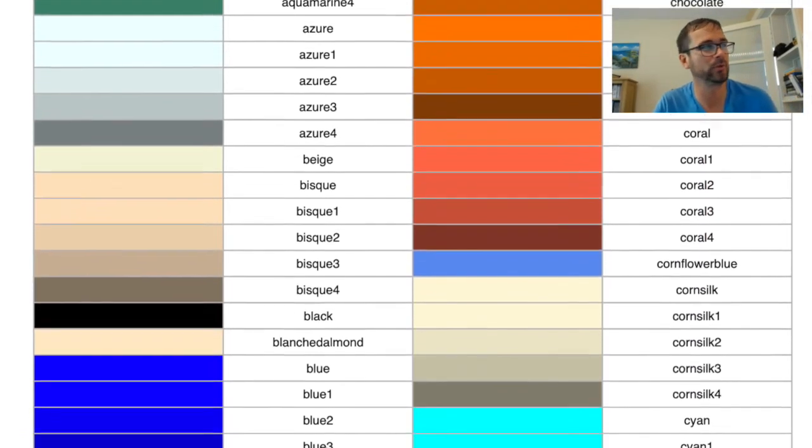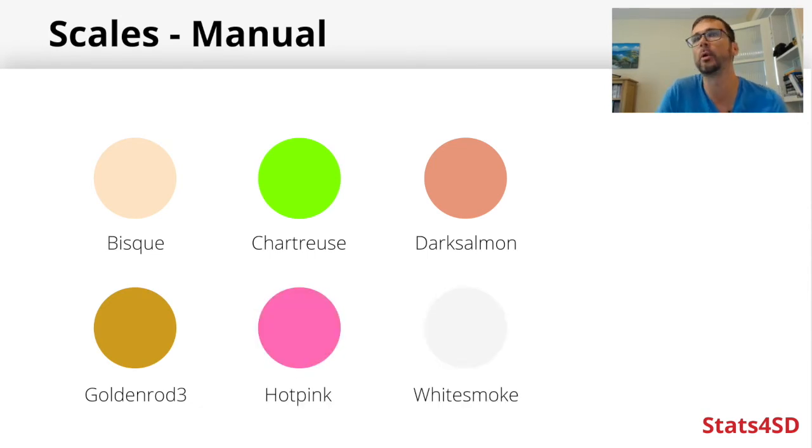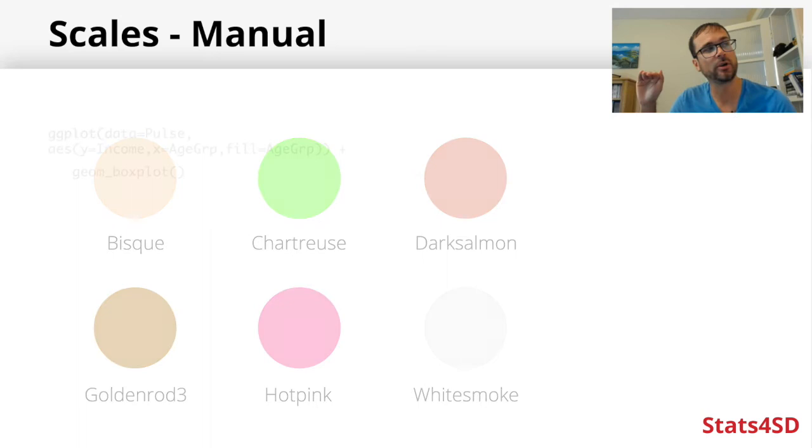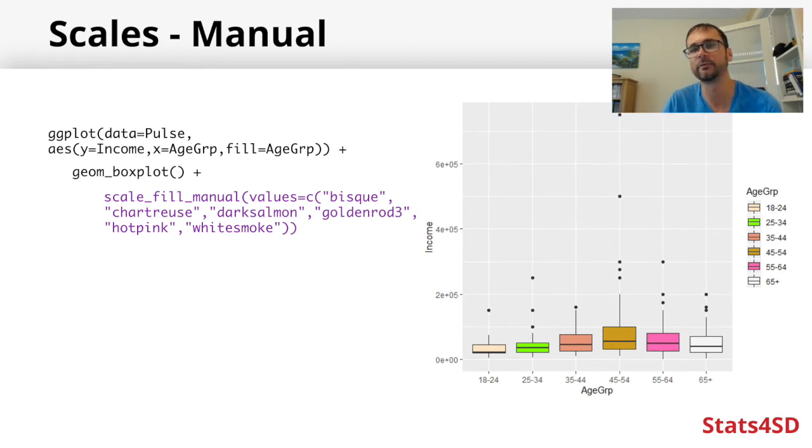I've gone through the R color charts and picked out bisque, chartreuse, dark salmon, goldenrod, hot pink, and white smoke - colors I want to add to my six boxes. The way I do this is after geom_boxplot, I add a plus to add an extra layer. I use scale_fill_manual, then set the values argument and give this list of colors I've picked from the R color chart. All these colors have to be in quotation marks, and we use the c function to bring all six colors together. We need to give it six colors since we have six groups.